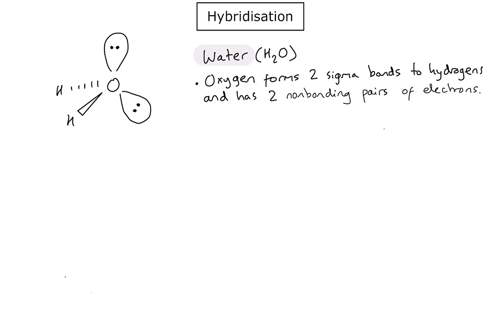First of all, I know that my oxygen is forming two sigma bonds with the two hydrogens, and it also has two non-bonding pairs of electrons. And from the 3D Lewis diagram I've drawn on the left, we can identify that the electron geometry is tetrahedral.